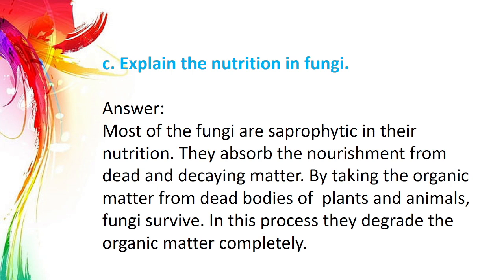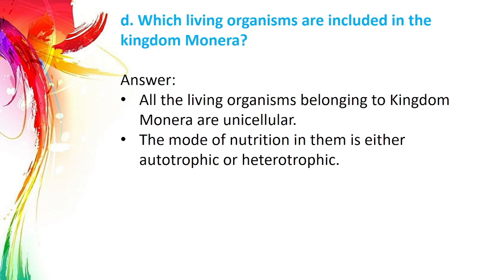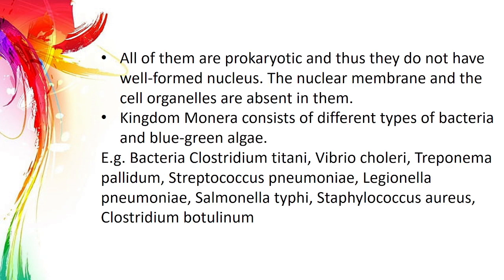Question 5D: Which living organisms are included in Kingdom Monera? Answer: All living organisms belonging to Kingdom Monera are unicellular. Their mode of nutrition is either autotrophic or heterotrophic. All of them are prokaryotic and thus do not have a well-formed nucleus. The nuclear membrane and cell organelles are absent in them. Kingdom Monera consists of different types of bacteria and blue-green algae.